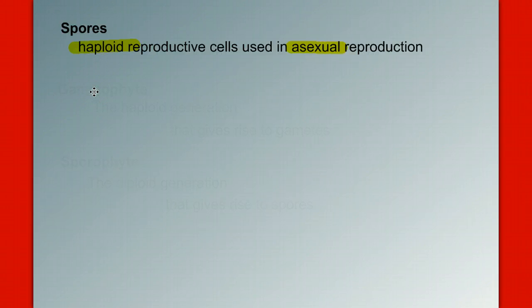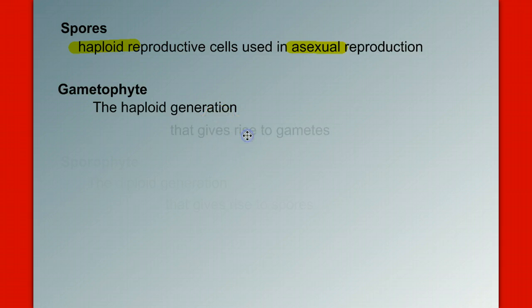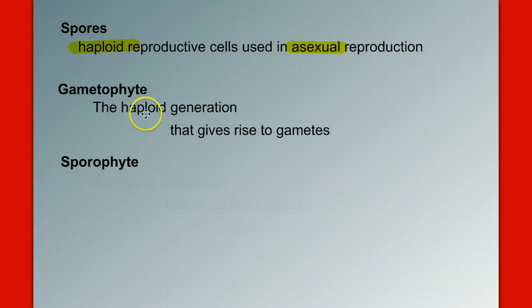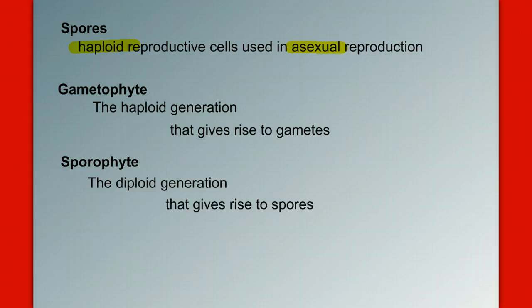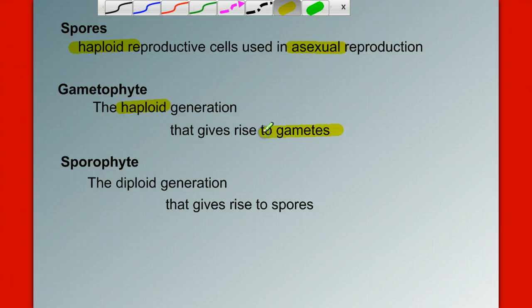Two more terms and then we can get started — these are the two kind of hard ones at first. We have gametophyte: the haploid generation that gives rise to gametes. Alternating with gametophyte in the alternation of generations will be sporophyte — the diploid generation. If gametophytes give rise to gametes, then sporophytes give rise to spores. So: gametophytes are haploid and they make gametes; sporophytes are diploid and they make spores.